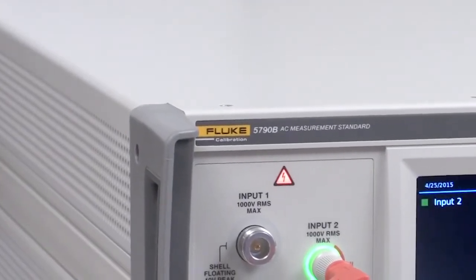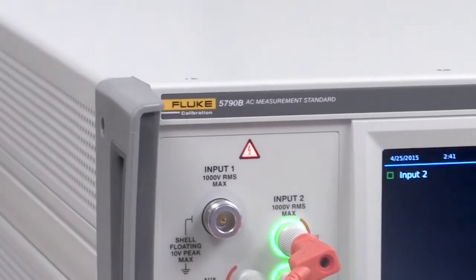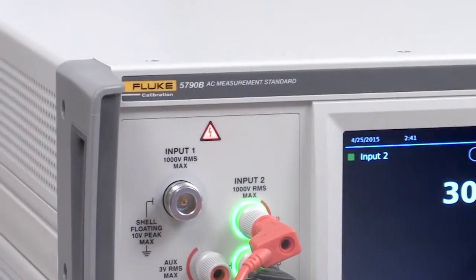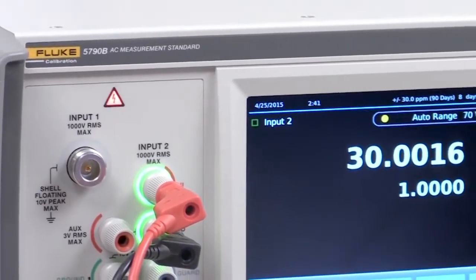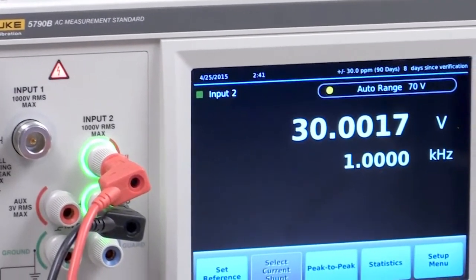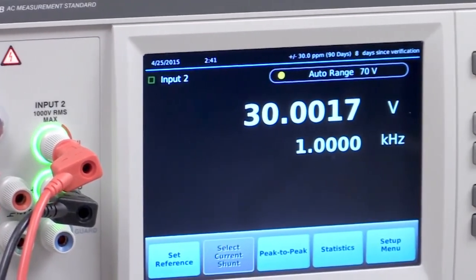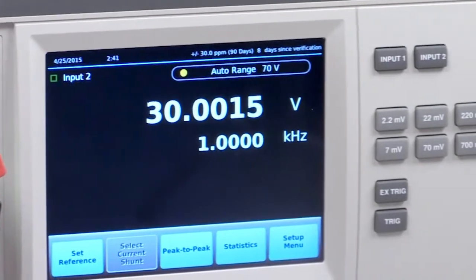The 5790B AC measurement standard is an AC measurement and transfer standard that lets you make AC voltage and current measurements with accuracies as good as 24 parts per million. It combines the accuracy you would expect from a thermal transfer standard with the ease of use of a digital multimeter.